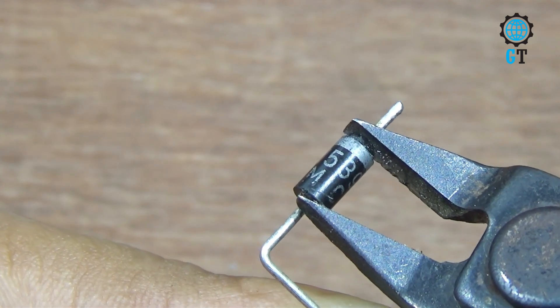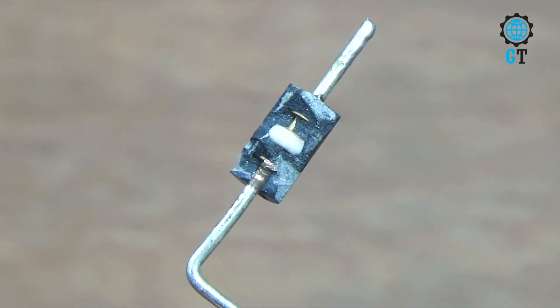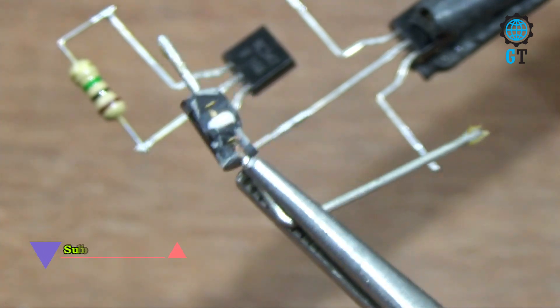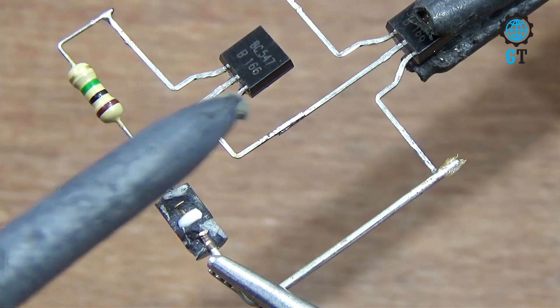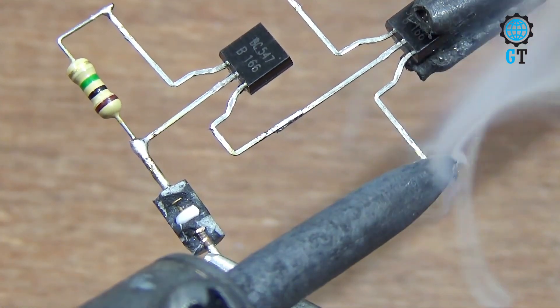Now we remove the resin case of this diode. You can see what I have done here. Now we connect diode with the circuit. Connect diode positive leg with collector of transistor. And connect diode negative leg with emitter of transistor.